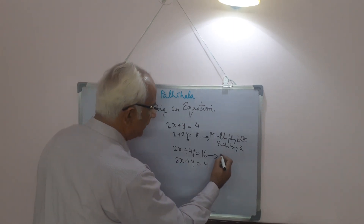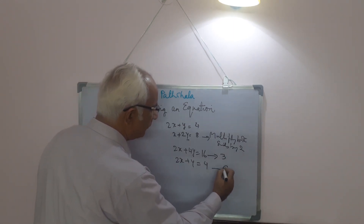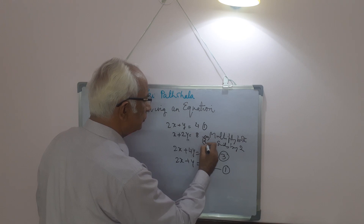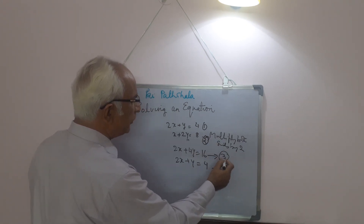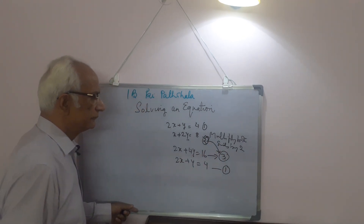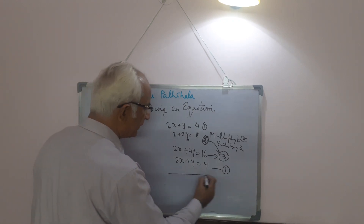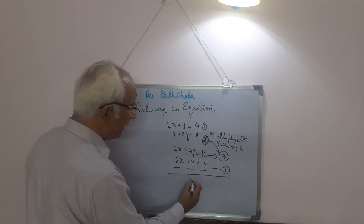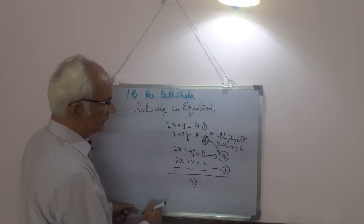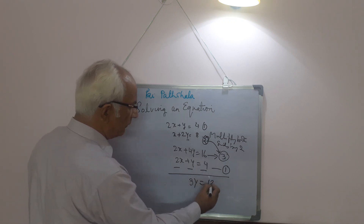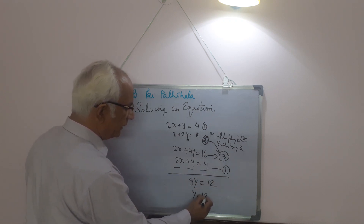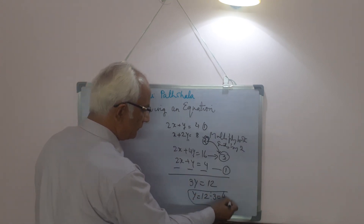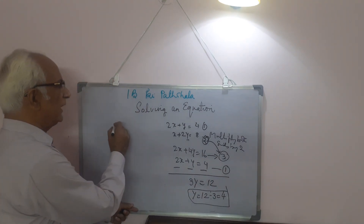Now we subtract equation 1 from equation 3. When we subtract each term, 2x minus 2x becomes 0, 4y minus y is 3y, and 16 minus 4 is 12. So 3y equals 12, and y equals 4.